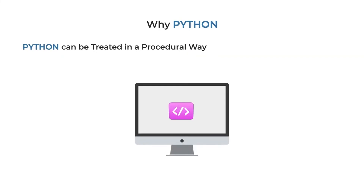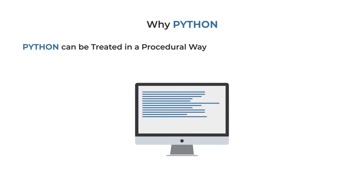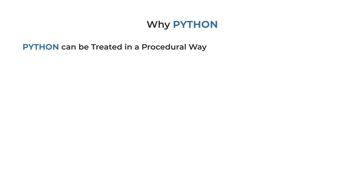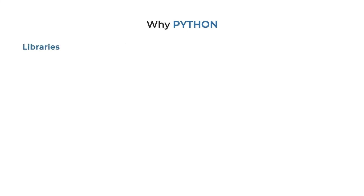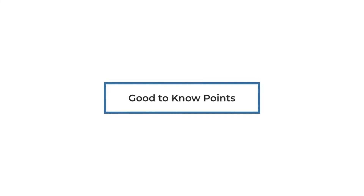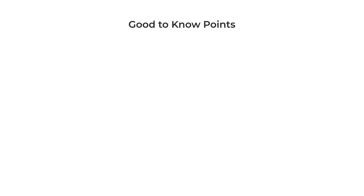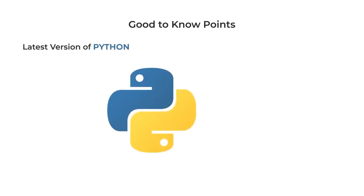Python supports both object-oriented and procedural programming. You can write procedures, get a name for a procedure — that is called procedural programming — and that is also possible in Python. Regarding Python versions: the latest version is Python 3. There is also Python 2.7, but the 3.x version is what I recommend everyone to use right now. That said, some companies still use Python 2.x, so you don't need to completely discard it.